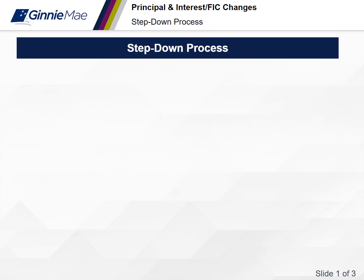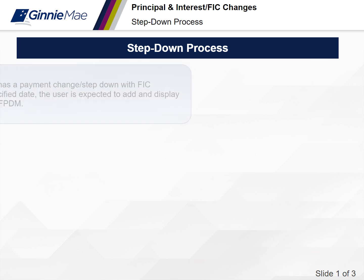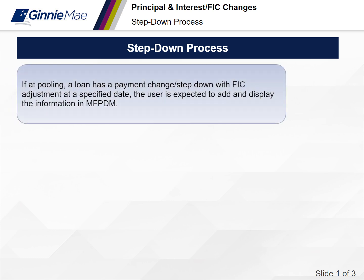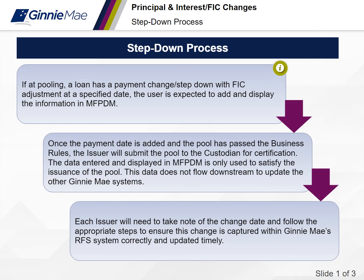Regarding P&I, FIC changes, step-downs, and the different steps that we need to do: if at pooling, a loan has a payment change or step-down with a FIC adjustment at the specified date, the issuer is expected to add and display the information in MFPDM. Once the payment date is added and the pool has passed the business validation rules, the issuer will submit that pool to the custodian for certification.